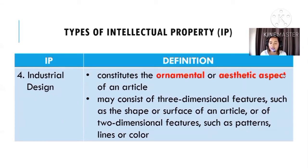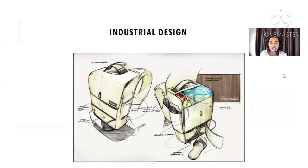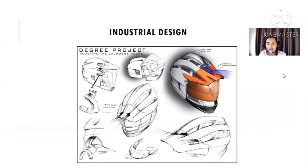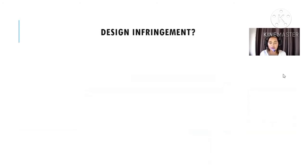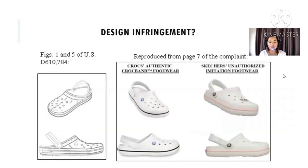Industrial design refers to the ornamental or aesthetic aspect of an article — it may consist of three-dimensional features such as the shape or surface of an article, or two-dimensional features such as patterns, lines, or color. Examples include bags, helmets, and headphones. Headphone design has evolved — from wired to Bluetooth wireless — and even colors are protected as industrial design.